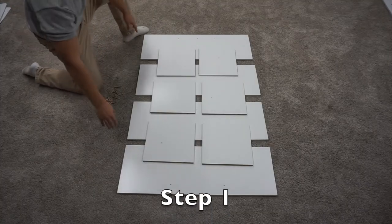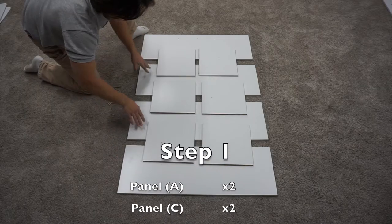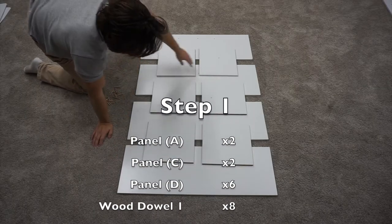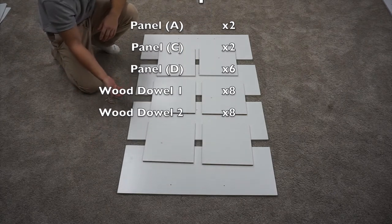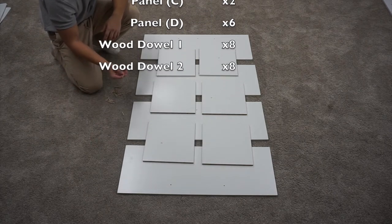For step one, you're going to need your two A panels, your two C panels, and your six D panels. You're also going to need eight of the small wooden dowels and eight of the long wooden dowels.